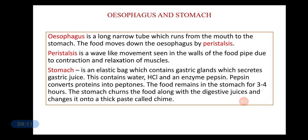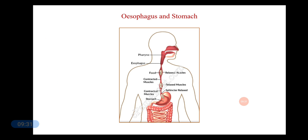The esophagus is a long narrow tube which runs from the mouth to the stomach. When you have chewed the food and are swallowing it, it enters the food pipe — the esophagus — which connects the mouth to the stomach. The food moves down the esophagus in a wave-like motion, which is known as peristalsis.